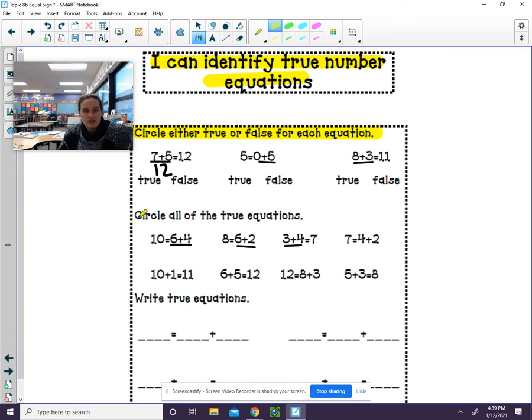The next set of directions says circle all the true equations. Again, show your thinking. What's six plus four? That's ten. So again, you're going to think, does ten equal ten? Either you'll circle it or put a big X through it.